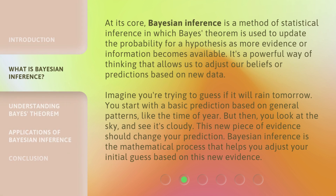At its core, Bayesian Inference is a method of statistical inference in which Bayes' theorem is used to update the probability for a hypothesis as more evidence or information becomes available. It's a powerful way of thinking that allows us to adjust our beliefs or predictions based on new data.